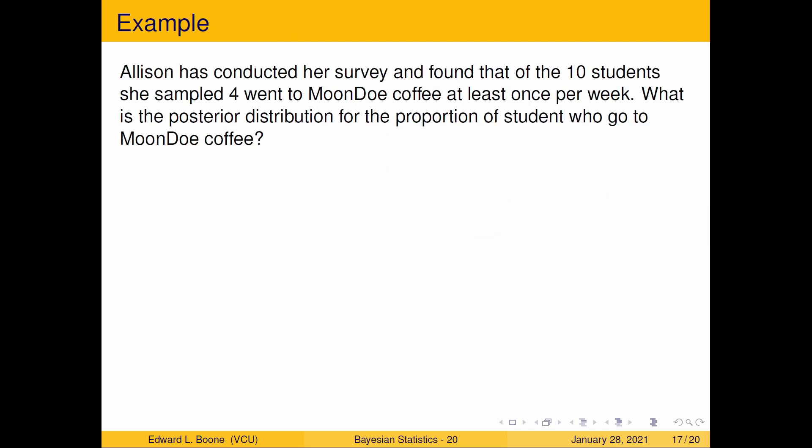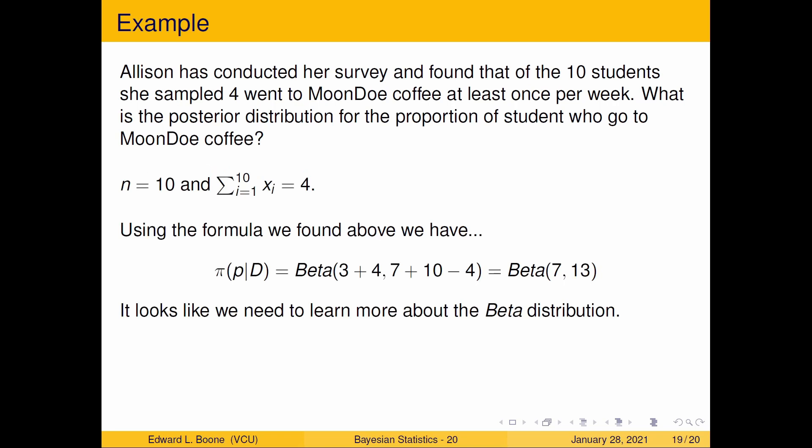She went out and conducted her experiment, and she found that she sampled 10 people, and four people said that they go there at least once per week. Keep in mind that you couldn't do this from a frequentist perspective, because from a frequentist perspective, you would need n to be at least 20. You're supposed to see at least 10 successes and 10 failures. Here, we just saw 10 total.